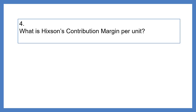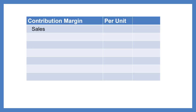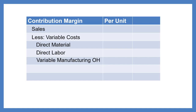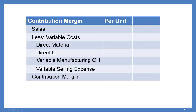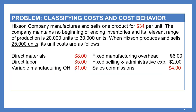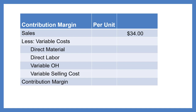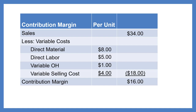Question 4. What is Hickson's contribution margin per unit? Contribution margin per unit equals sales minus all variable costs. Variable costs include direct material, direct labor, variable manufacturing overhead, and variable selling expense (sales commissions). Sales price is $34; variable costs are $8 + $5 + $1 + $4 = $18 total. It is important to note that contribution margin subtracts all variable costs, whether product or period costs. This gives us a contribution margin of $16 per unit.